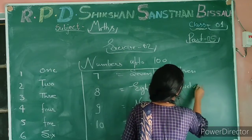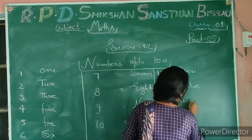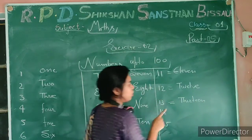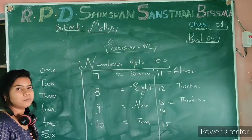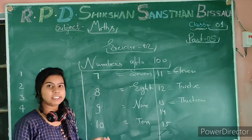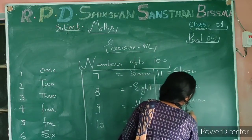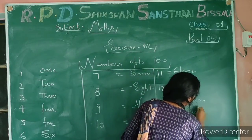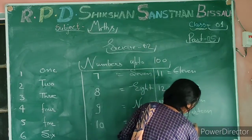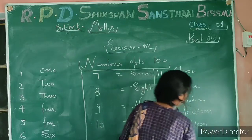This one is called ELEVEN and this one is 13 — we say THIRTEEN. For 40: F-O-U-R-T-E-E-N style endings. And for 50: F-I-F-T-Y. Some numbers are similar but some are not the same, so learn carefully.